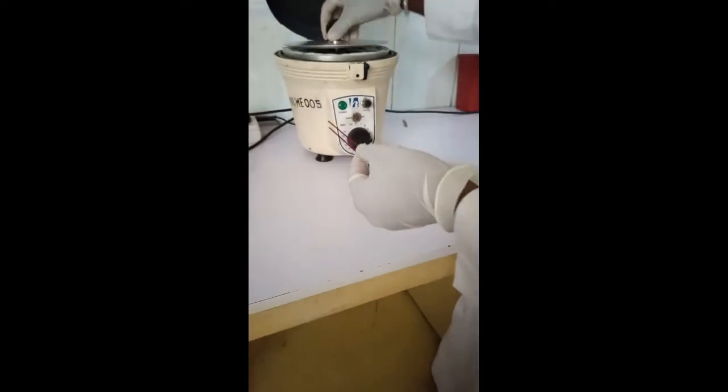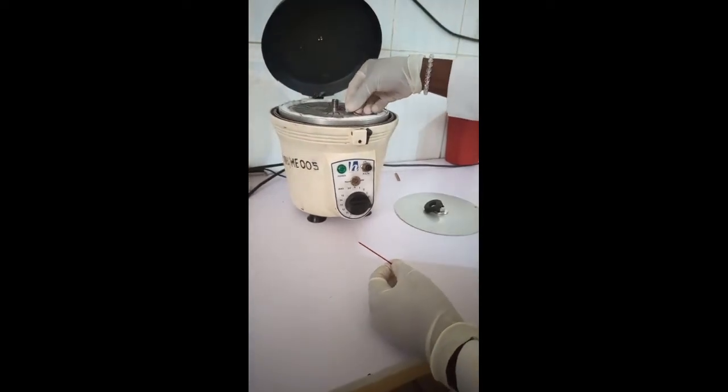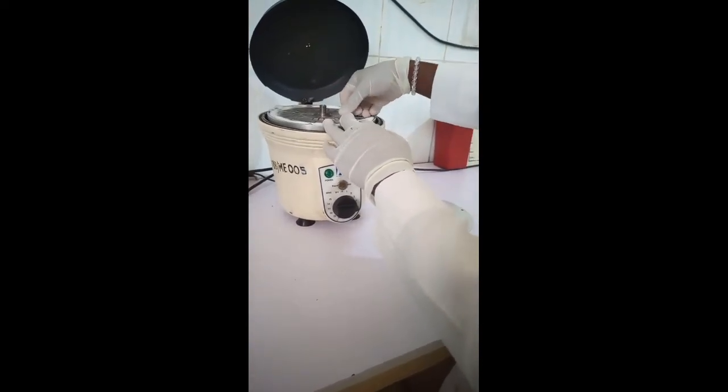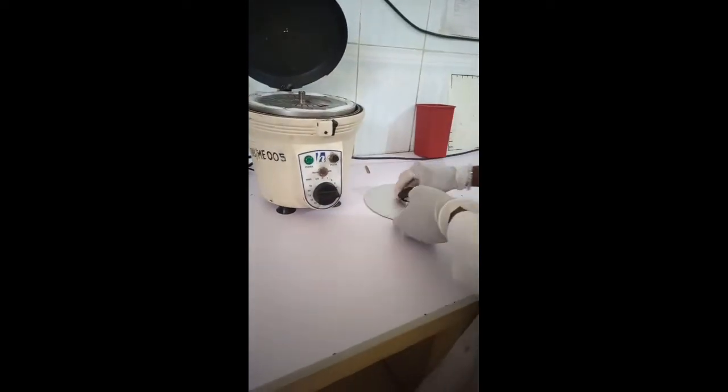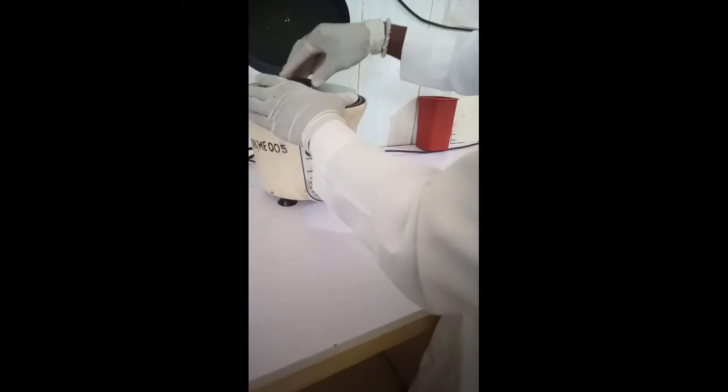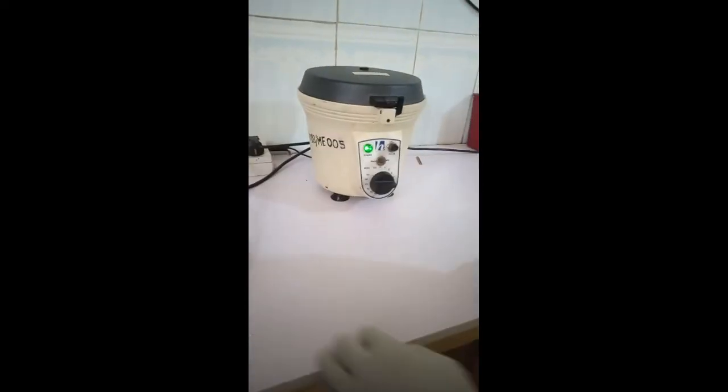So we proceed to the spinning stage. This is the micro-hematocrit centrifuge. We place the capillary tube in it with the sealed end facing you. And then you cover it. Remember both samples belong to one patient. This is because in case one breaks or you lose one, you will not have to repeat the procedure. You still have one to read. And then this is going to spin for five minutes.